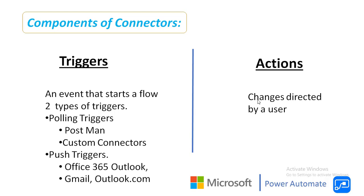Now we will talk about push triggers. Push triggers listen for data on an endpoint — they wait for an event to occur. When the event has occurred, a new run of your workflow instance will be started. For example, Office 365 Outlook, Gmail, and Outlook.com all work on push triggers.